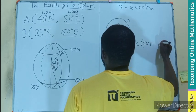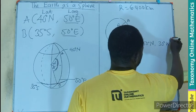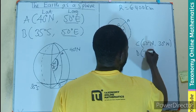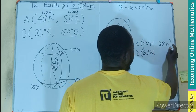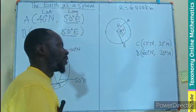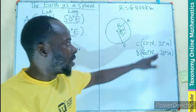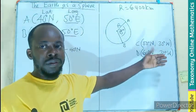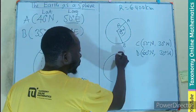Let's say we have point C at 50 degrees north and 30 degrees west, and point D at 60 degrees north and 30 degrees west. We want to represent this — it is also going to be a great circle because we have a common longitude. Let's make a sketch of what that would look like.